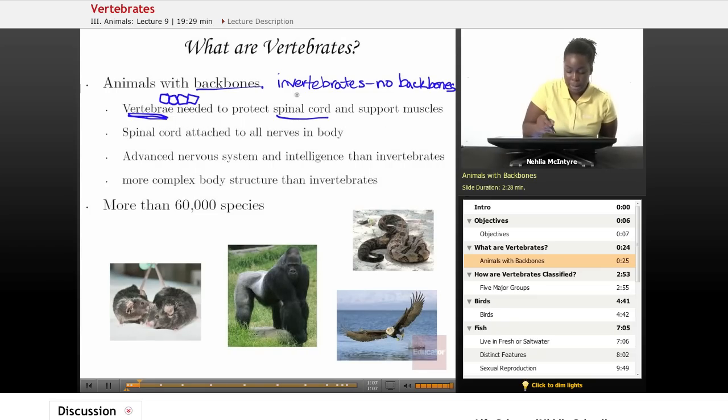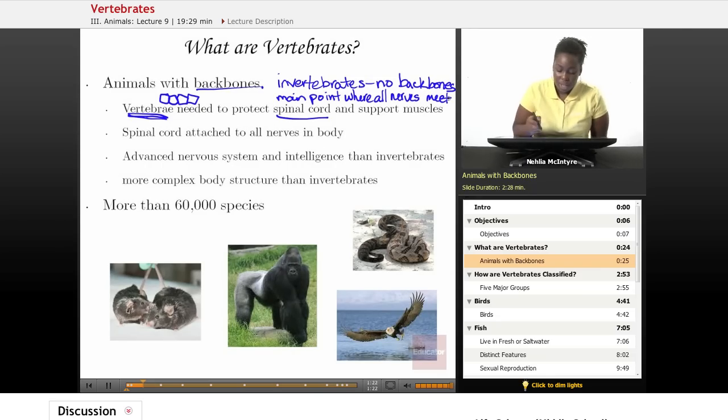The spinal cord is basically the main point where all nerves in the body meet and communicate with each other. And so it's very important that the spinal cord be protected, and that's what the vertebrae do. They also help to support the muscles that surround the spinal cord. So the spinal cord is actually attached to all nerves in the body.